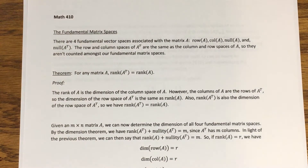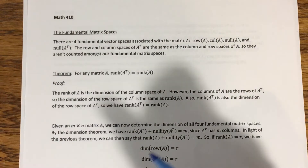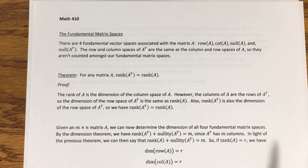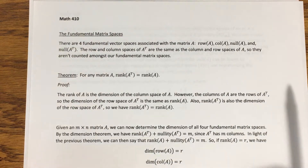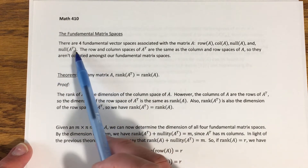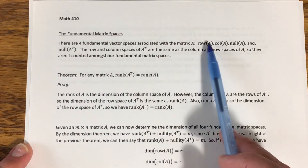Now I want to address the fundamental matrix spaces, which is what we're going to spend the rest of this section talking about. We have discussed three of the four fundamental matrix spaces so far. For a particular matrix A, we've talked about the row space, column space, and null space. There's one more vector space associated with the matrix A of interest here, and that's the null space of A transpose. So we consider that one of the fundamental matrix spaces of A.